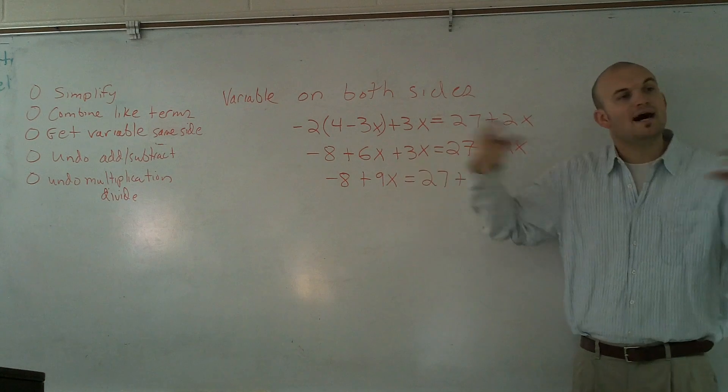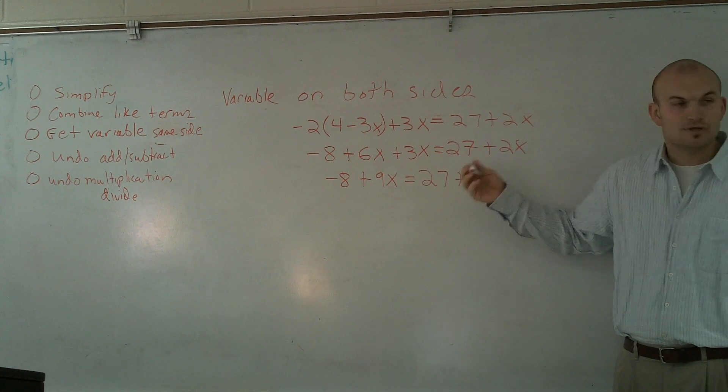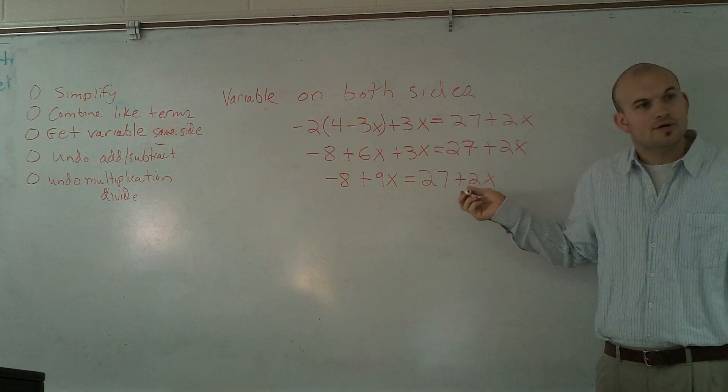This is saying I have 6x's and I have 3x's. So, I can combine them to have 9x's. But here, you just have the number 27. You don't know what x is. So, you can't say 27 plus 2 of something you don't know.